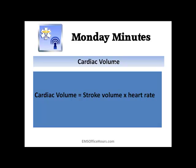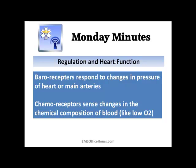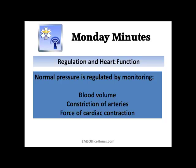Now we have the regulation and heart function section. This covers rate and speed. You have your baroreceptors, which respond to changes in pressure of the heart or the main arteries, and then your chemoreceptors, which sense changes in the chemical composition of blood — like how much oxygen is in the blood. Normal pressure is regulated by monitoring things like blood volume, constriction of the arteries, and the force of cardiac contraction.